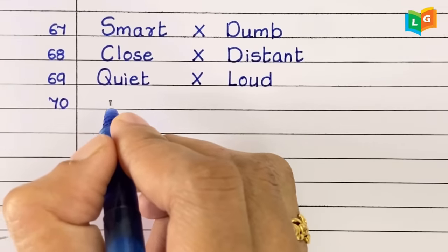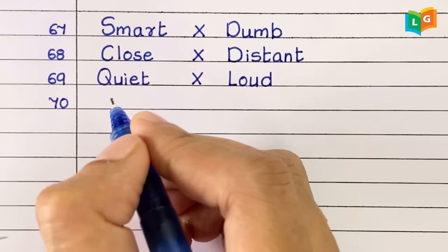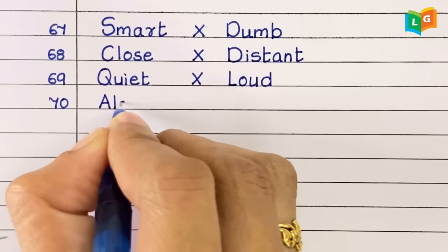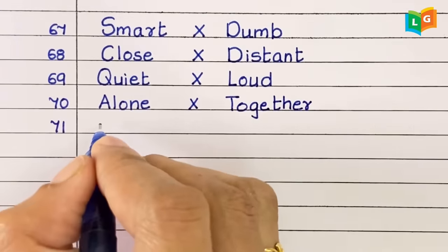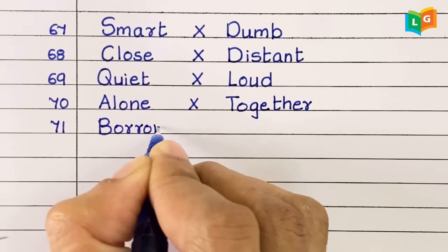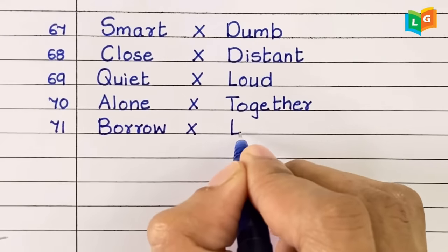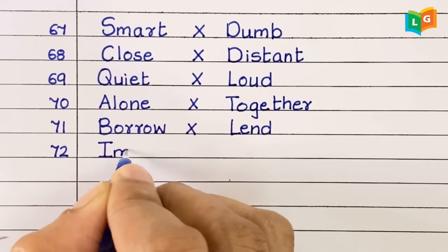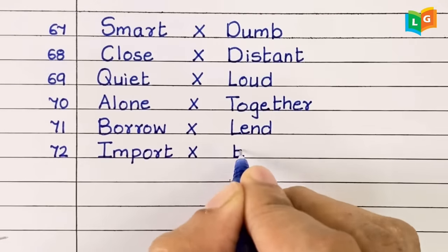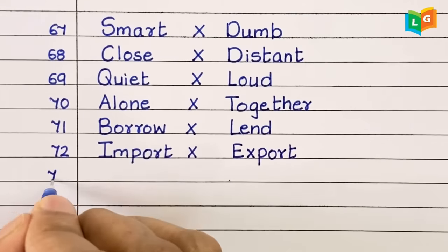Seventy, alone, together. Seventy-one, borrow, lend. Seventy-two, import, export.